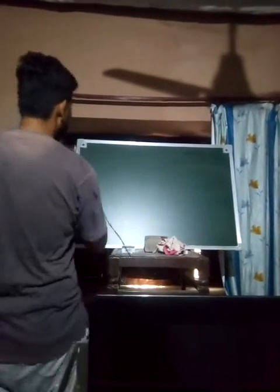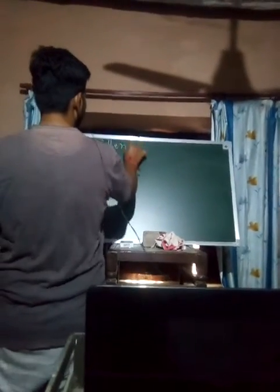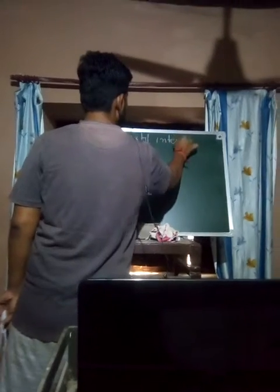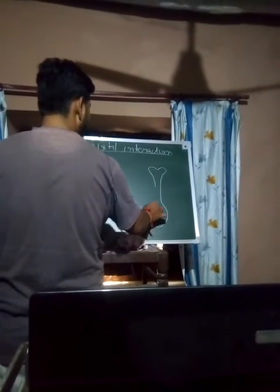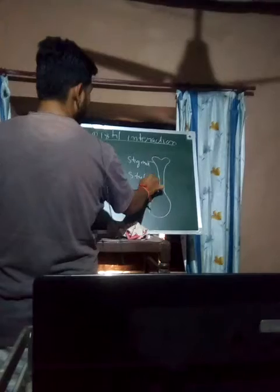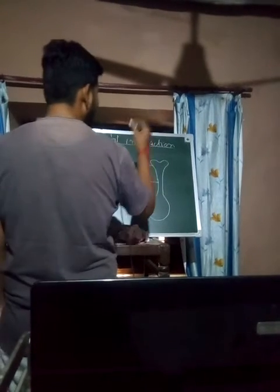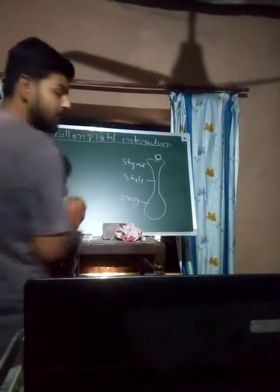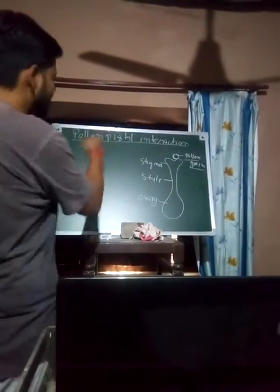The pollen reaches the stigma, and now the next topic begins — pollen-pistil interaction. This is the interaction between the pollen and the pistil. The structure of the pistil consists of three parts: the stigma, the style, and the ovary. As a result of pollination, the pollen grain arrives on the stigma. So the next event in sexual reproduction of the flowering plant is the pollen-pistil interaction.